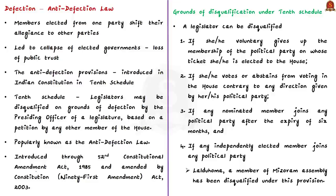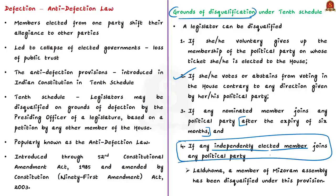The 10th Schedule, popularly known as the anti-defection law, was introduced by the Constitution 52nd Amendment Act of 1985 and amended by the 91st Constitutional Amendment Act of 2003. The grounds of disqualification include: if a member voluntarily gives up membership of the political party on whose ticket they were elected; if the member votes or abstains from voting contrary to their party's direction; if a nominated member joins a political party after the expiry of six months; and if an independently elected member joins any political party.